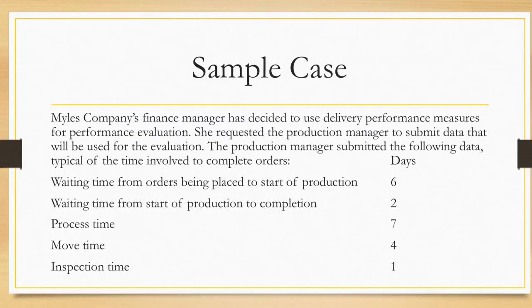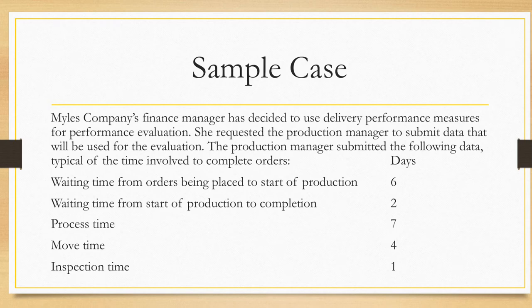Miles Company's finance manager has decided to use delivery performance measures for performance evaluation. She requested the production manager to submit data that will be used for the evaluation. The production manager submitted the following data, typical of the time involved to complete orders: waiting time from orders being placed to start of production — six days; waiting time from start of production to completion — two days; process time — seven days; move time — four days; inspection time — one day.